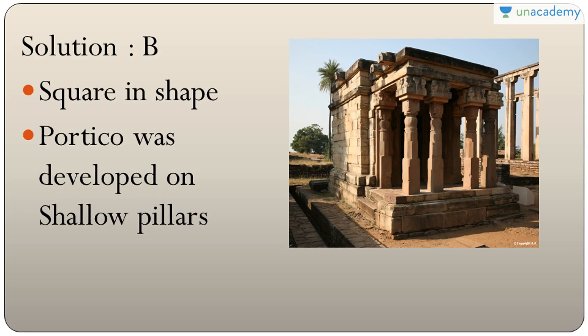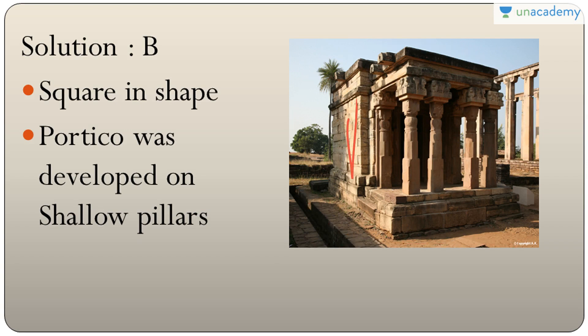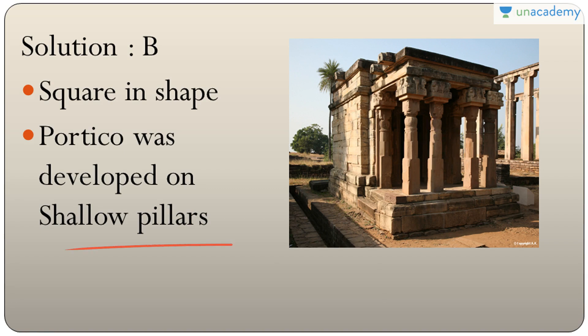The initial temple is in square shape with a flat roof and is built on a low platform. The portico (potiko) is developed on shallow pillars.